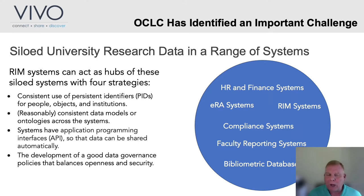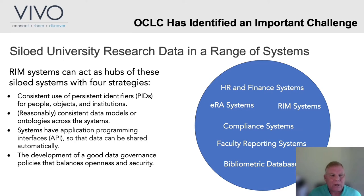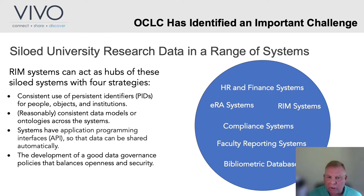This becomes a real problem as universities try to maximize their funding and the impact of their research. RIM systems can act as hubs for many of these siloed systems through four consistent strategies: first, consistent use of persistent identifiers for people, objects, and institutions; second, a reasonably consistent data model or ontologies across systems; third, APIs so that data can be automatically shared; and finally, good data governance policies that balance openness and security — which has been key at Texas A&M.